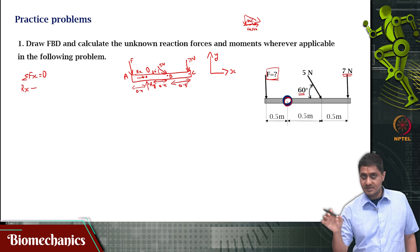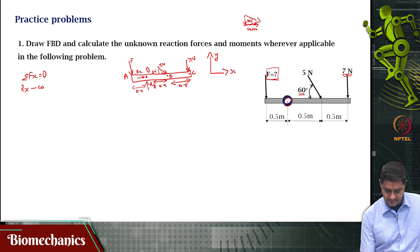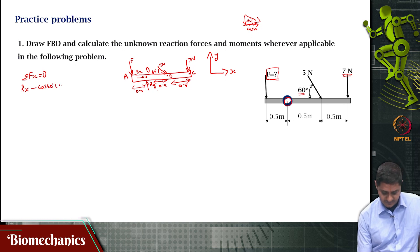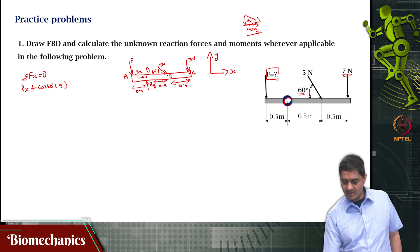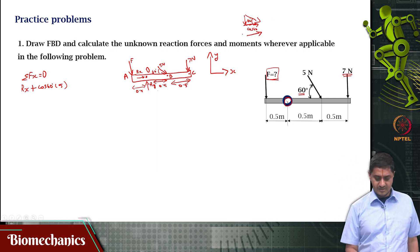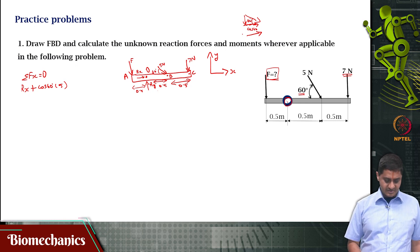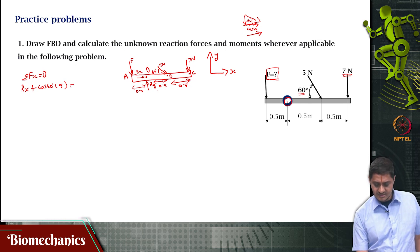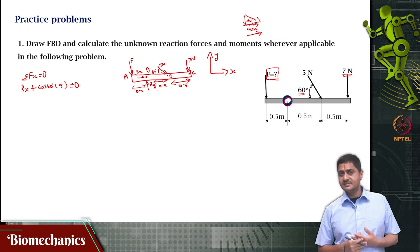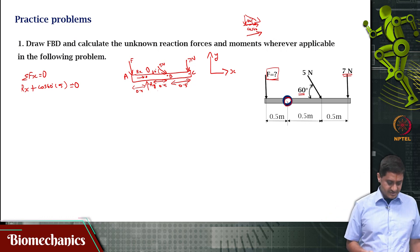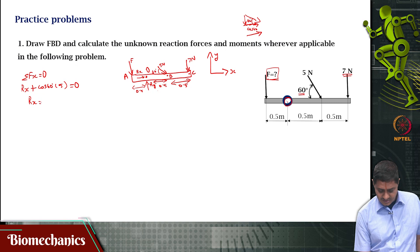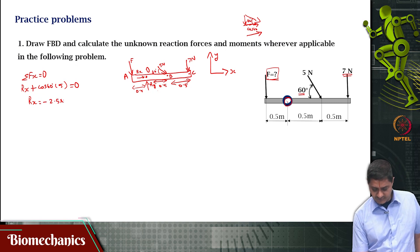The X component of the 5 Newton force is cos60 times 5. Since it is in the positive X direction, it will be positive. So the equation is RX plus 5 cos60 = 0. This straight away gives RX = minus 2.5 Newtons.